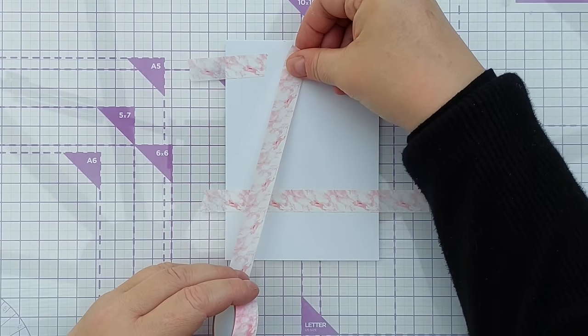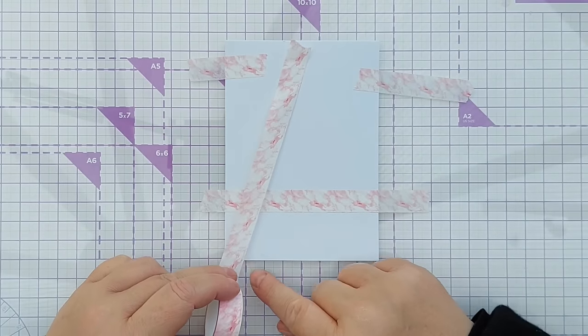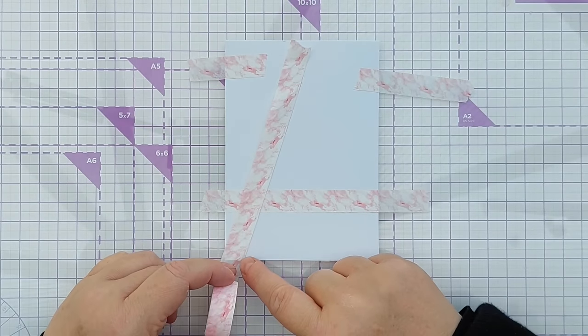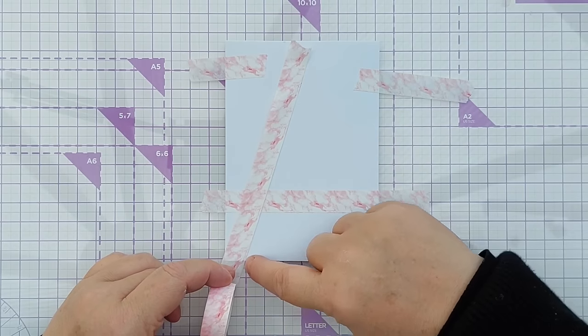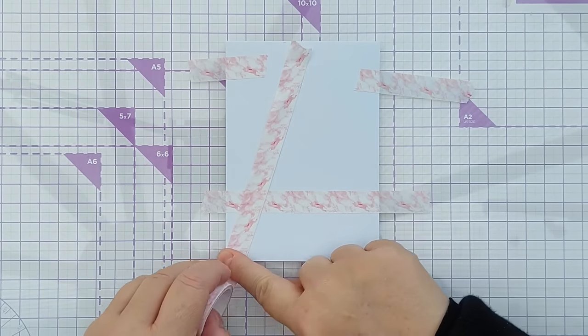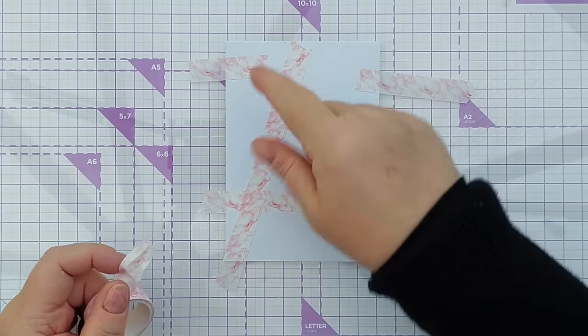I'm going to line my washi tape up so that it touches that little dot I made and then drag it down so that it crosses here where this line meets, and this is just eyeballing really, no measuring involved.